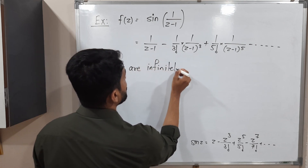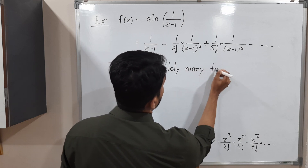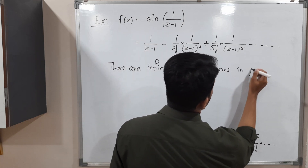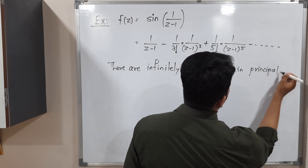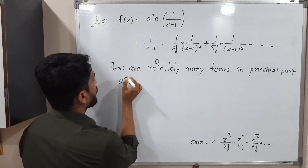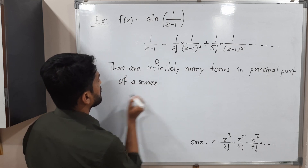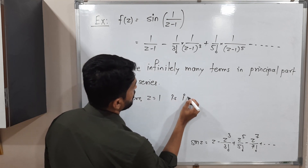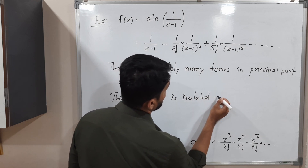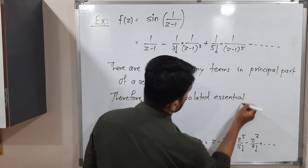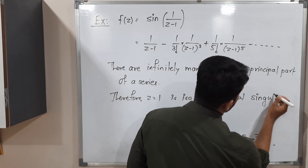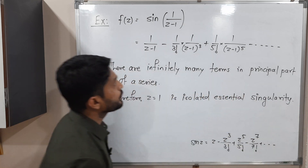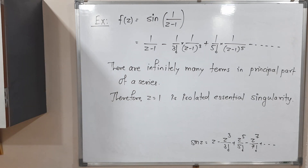There are infinitely many terms in the principal part of this series. Therefore z equals one is an isolated essential singularity. In this way we proved that z equals one is an isolated essential singularity of the given function f(z). We will stop here and meet in the next video. Thank you, see you.